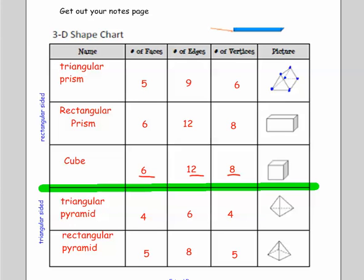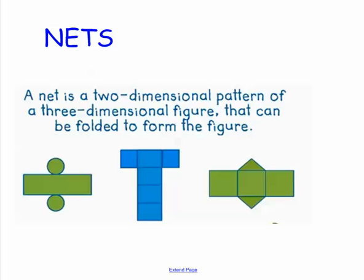The vertices are the easiest to identify, followed by the edges, and then the faces are sometimes the harder ones to look at. If you have questions, please make sure and ask me tomorrow. We're going to move on now to nets. We're still looking at the three-dimensional shapes, but a net is a two-dimensional pattern of that three-dimensional figure.